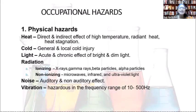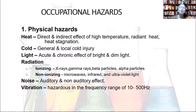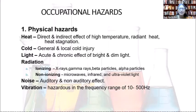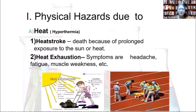There are radiation hazards including ionizing radiation — X-rays, gamma rays, beta particles, alpha particles — and non-ionizing radiation such as microwaves, infrared, and ultraviolet light. Noise hazards affect workers in factories with drilling machines and other machinery, and may cause harm in the frequency range of 10 to 15,500 Hz. Vibration from machinery also poses hazards.